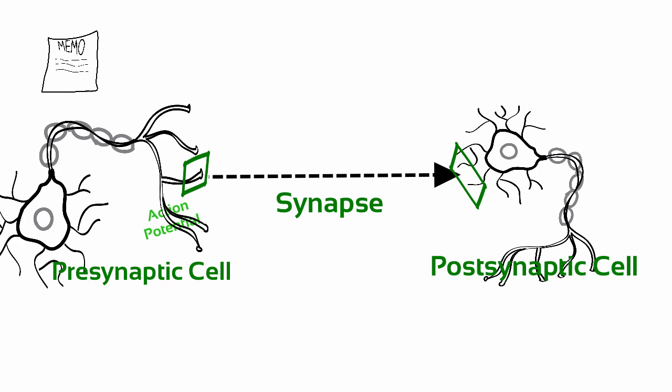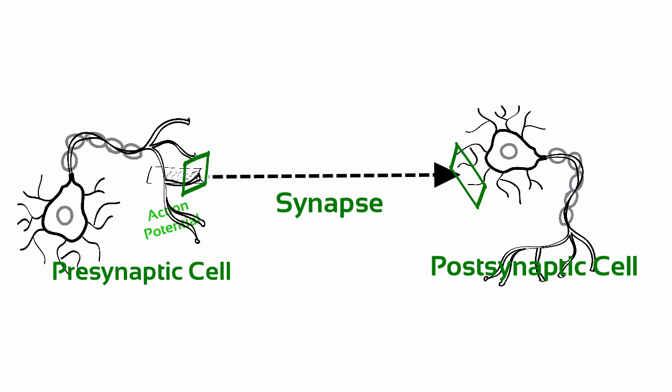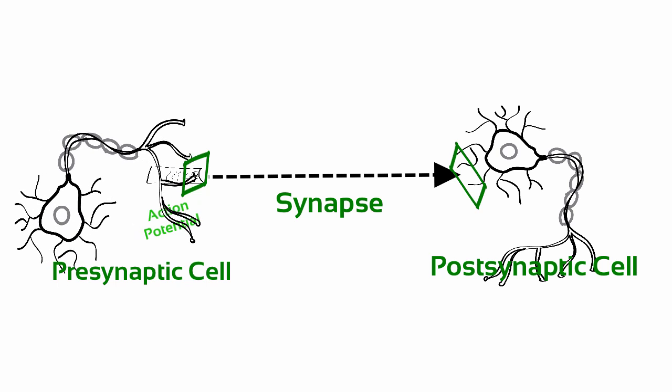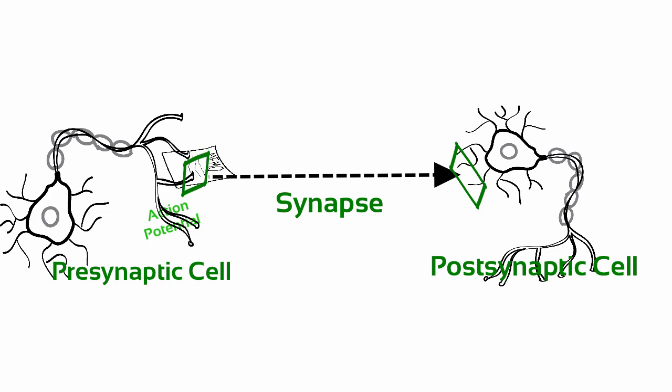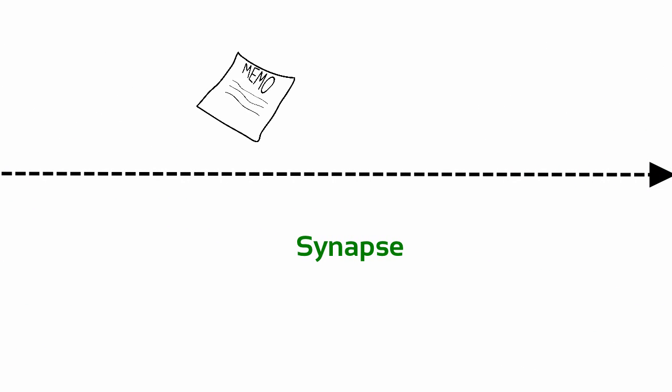At the moment of action potential generation, the presynaptic cell has essentially made the decision to communicate with the postsynaptic cell. The membrane of the presynaptic cell contains a specific type of switch that is sensitive to the action potential and cranks up the release machinery. They only open when the action potential threshold is reached.